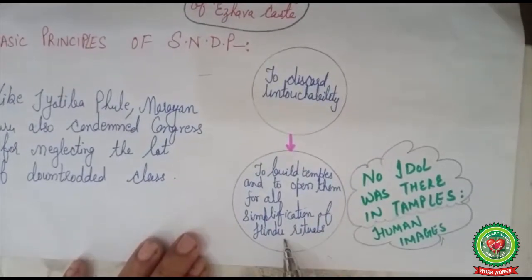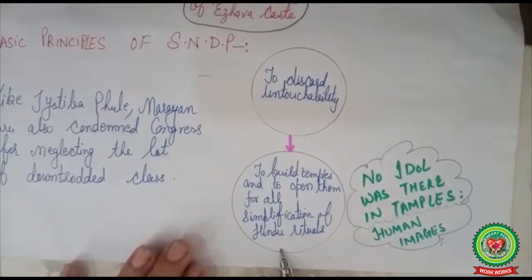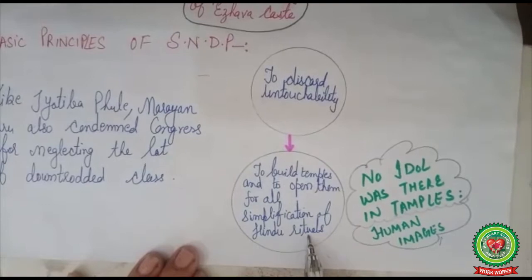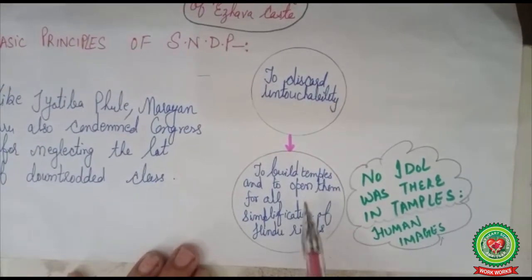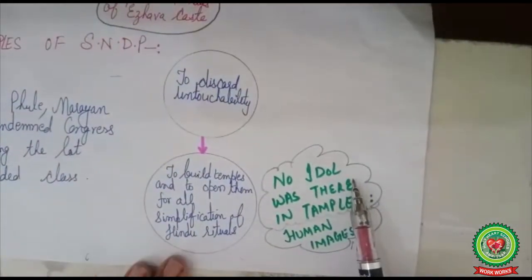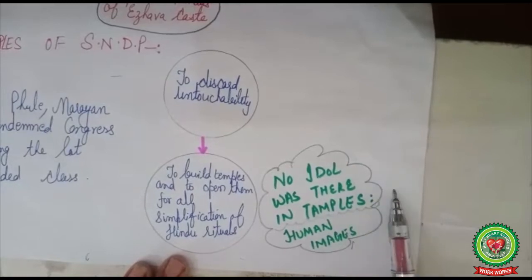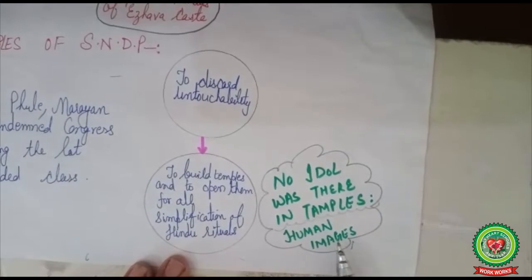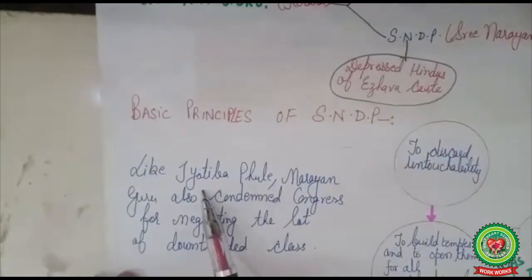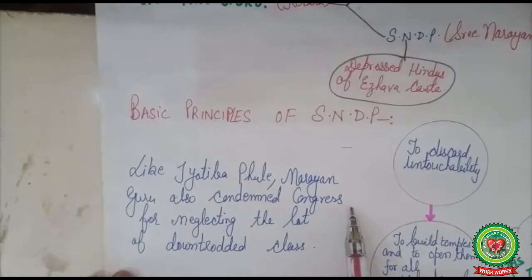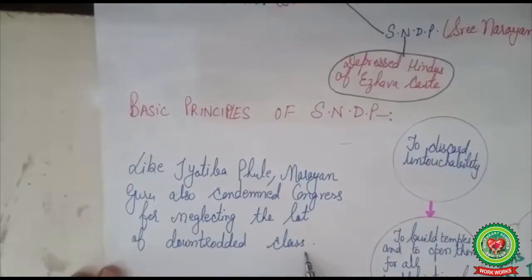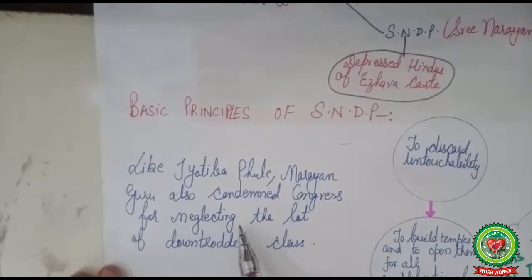Narayan Guru built temples and opened them for all sections of society. He simplified Hindu rituals, saying that shastras and mantras were inventions of pandits who wanted to hold a monopoly in society. Very interestingly, the temples set up by Narayan Guru had no idols — no images of gods and goddesses. Instead, there were images of human beings, reflecting his idea that if a person does not give equal respect to other human beings, he cannot be a true devotee of God.